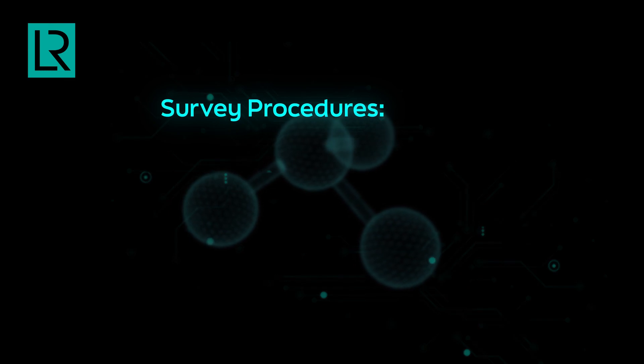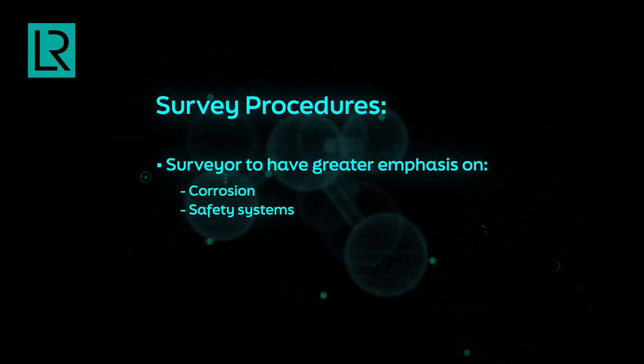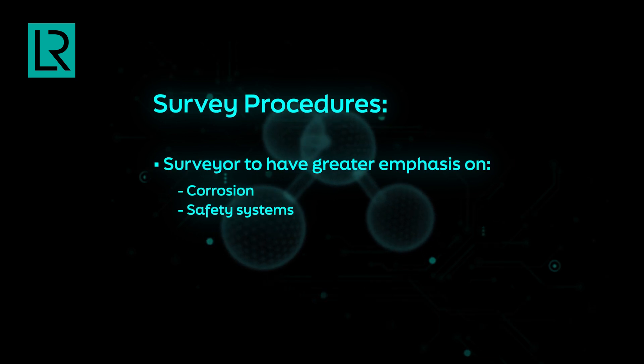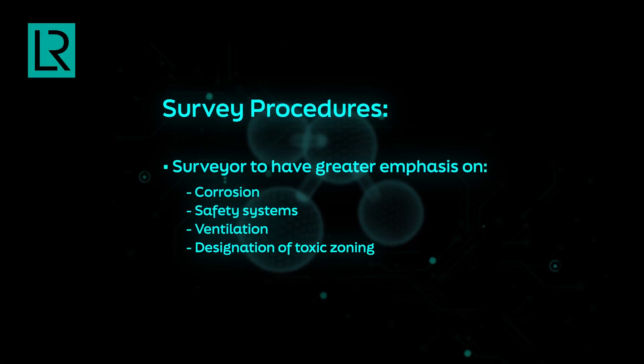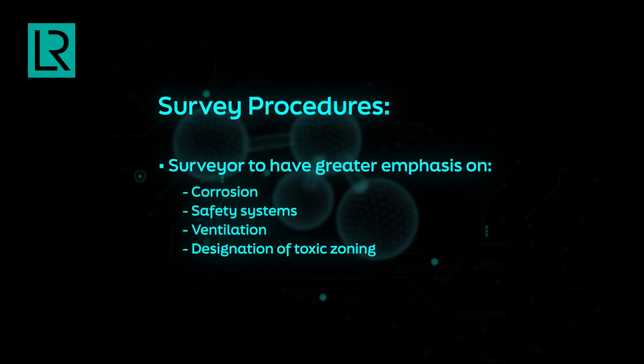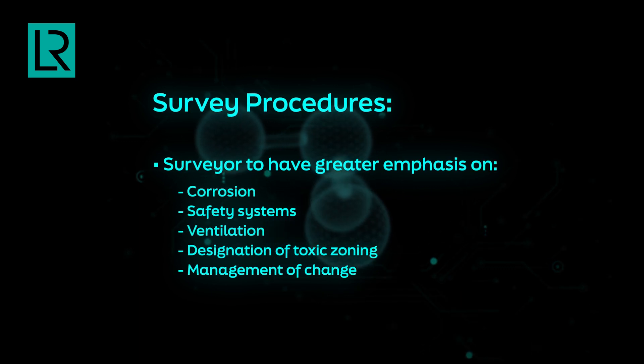During a survey, I would expect the surveyor to place greater emphasis on corrosion and on the safety systems applied, such as gas detection systems that are critical to mitigating the toxic load, and on ventilation, since we will be requiring increased rates of ventilation and the dilution from that ventilation is critical to achieve the necessary level of safety. Equally, the designation of toxic zoning to ensure compliance has been maintained, and management of change and the escalation of those changes to safeguards already applied on board. Ultimately, the surveyor will confirm that compliance is met to our rules, regulations and procedures, and that deterioration and degradation of the systems has maintained that minimum level of safety.